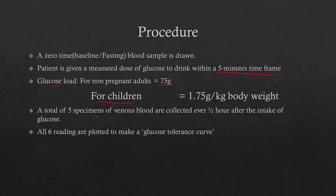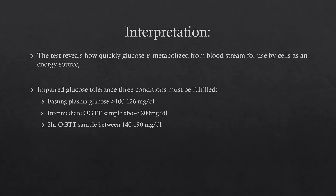A total of 5 specimens of venous blood are collected every half hour after the intake of glucose. All 6 readings — including the zero-time or fasting one — are plotted to make a glucose tolerance curve. The test reveals how quickly glucose is metabolized from the bloodstream for use by cells as an energy source.